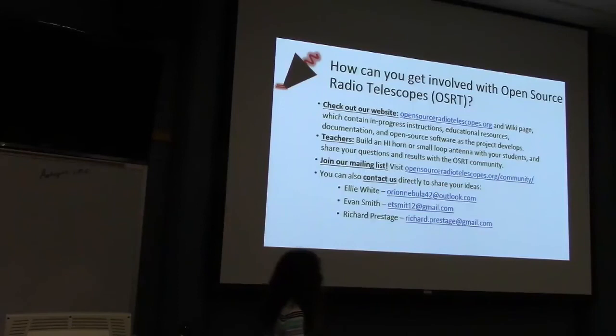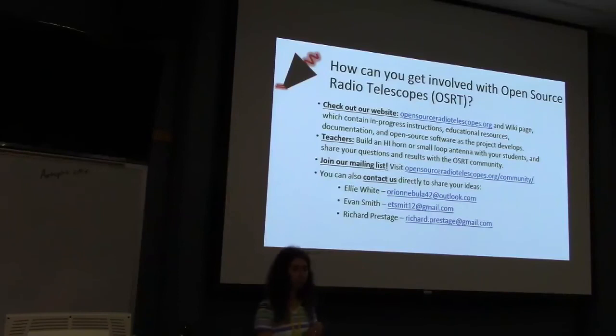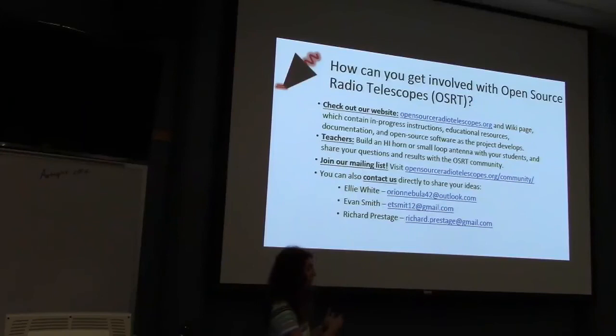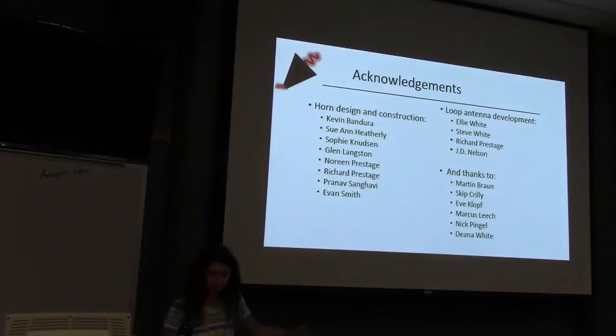Our website is www.opensourceradiotelescopes.org. On that website we link to our wiki, which is a great place for developing ideas that will then be migrated to the website once they're more complete. We have a very active mailing list community with lots of participants from varied backgrounds and great ideas. The mailing list serves as both a discussion place as well as a place for students to ask questions. We also hope to migrate the mailing list to more of a forum-type format in the future. You can also contact one of us directly — you can see our emails on the slide.